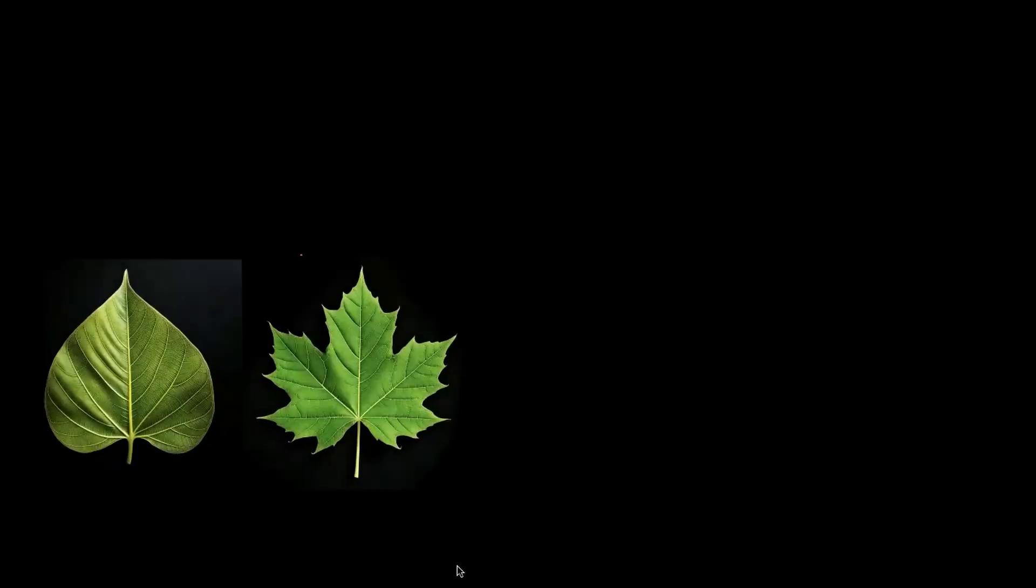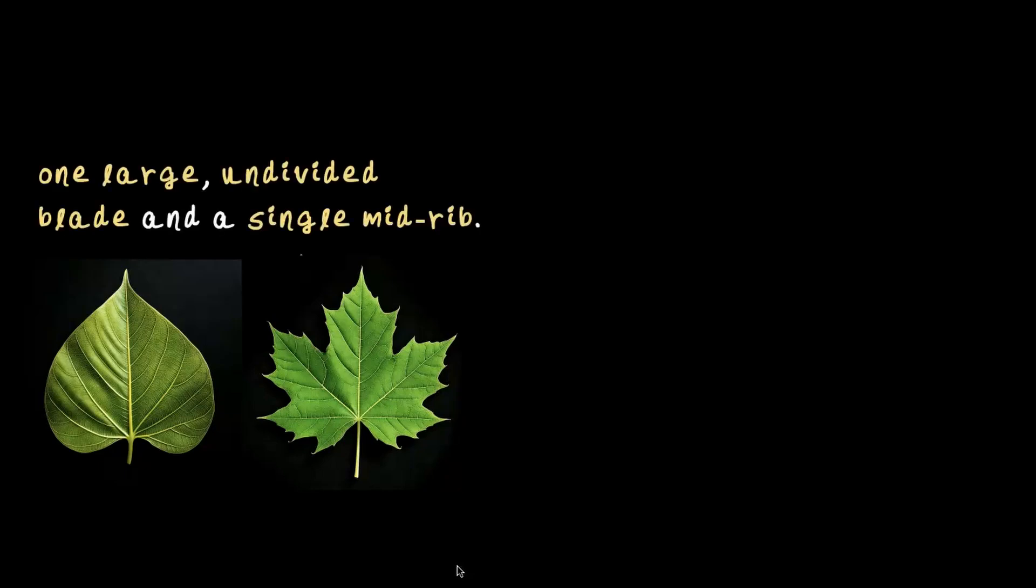Let's take a look at these two leaves here. What do you notice? If you take these two together, you can see a single large blade. This large blade or lamina as it is called is undivided. One large undivided blade and it has a single mid rib or mid vein. Simple, right?